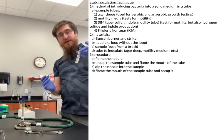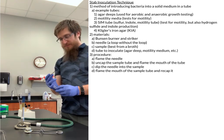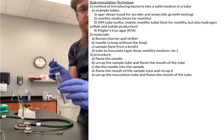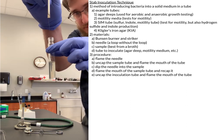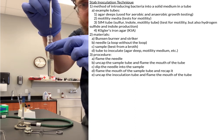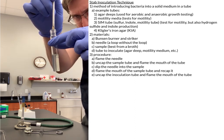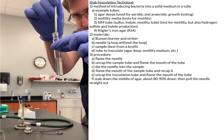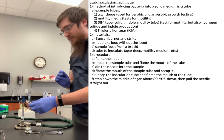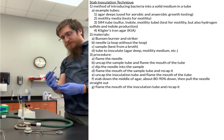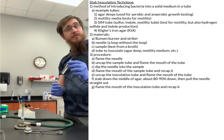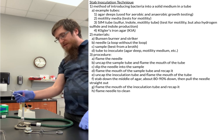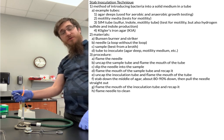Now when we're ready to inoculate our medium, we're going to uncap it, flame the mouth of the tube, and I'm going to try as best as possible to come down straight in the middle. I'm going to stab down inside of the medium almost all the way, and then try to pull it back out. Flame the mouth of the tube and recap it — that's basically how we complete that procedure. Of course, make sure that you flame at the end in order to clean your needle.